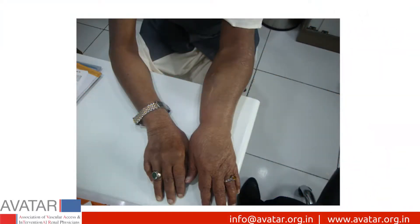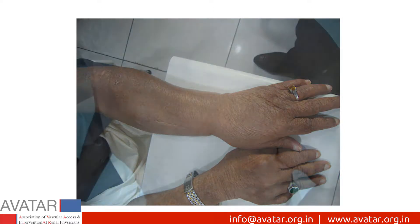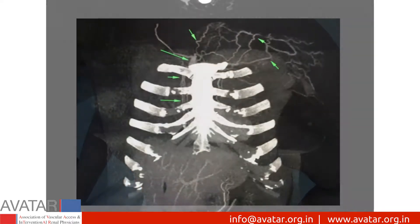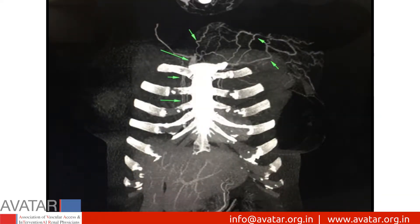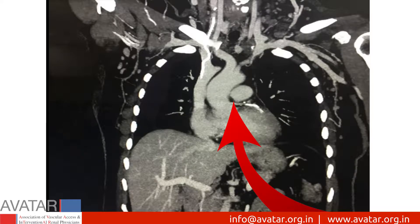This is a patient on maintenance hemodialysis through a left radiocephalic AV fistula who presented with disproportionate swelling of the left upper limb. On clinical examination, he has multiple collaterals on the anterior chest wall. CT venogram shows multiple collaterals and stenosis of the left brachiocephalic vein with abrupt cut-off.